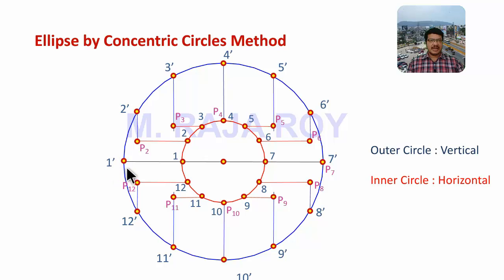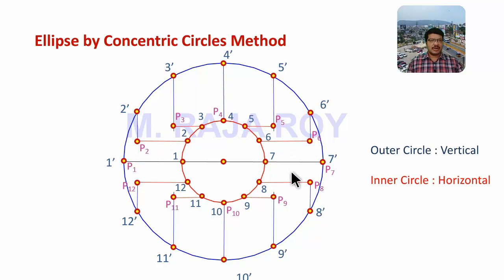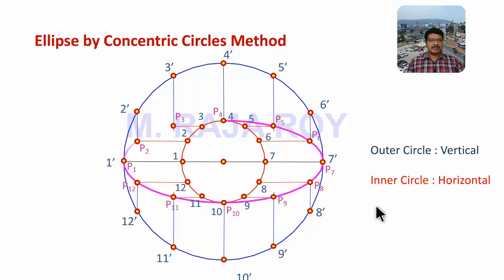Similarly, at point 1 dash you will get P1. Now join P1, P2, P3, P4, and so on up to P12 with a smooth freehand curve. This is the concentric circles method, which is the very easiest method among all these special methods.